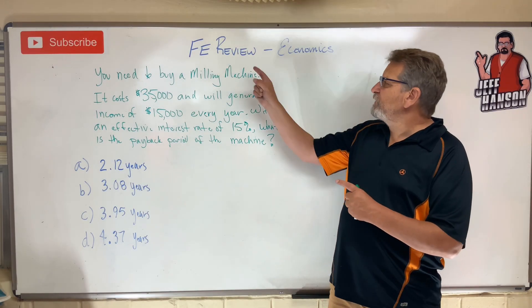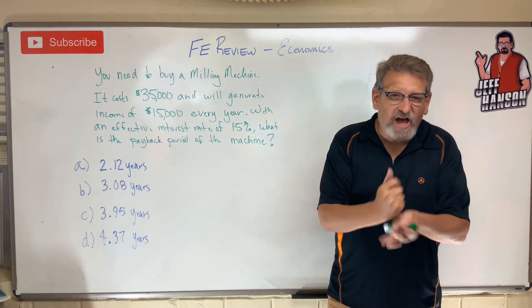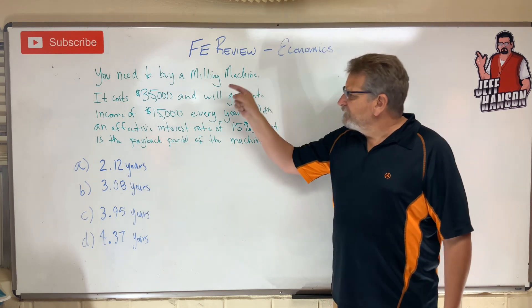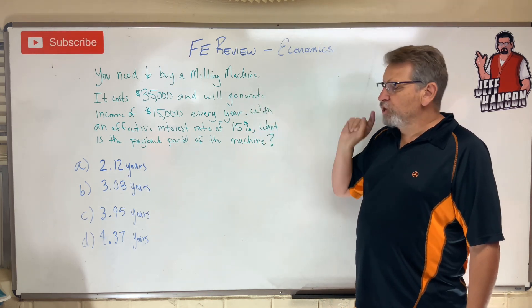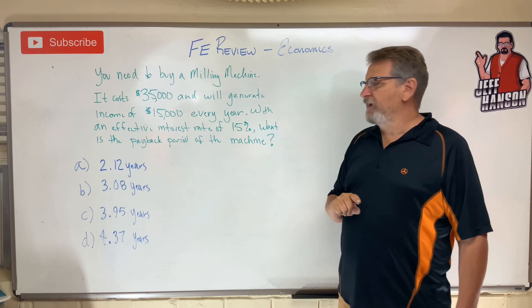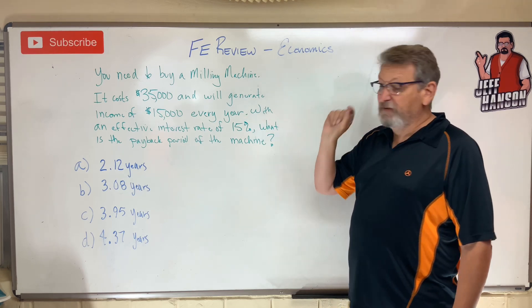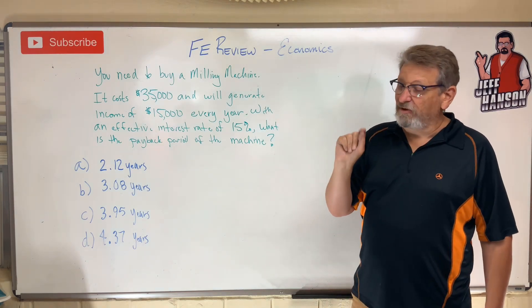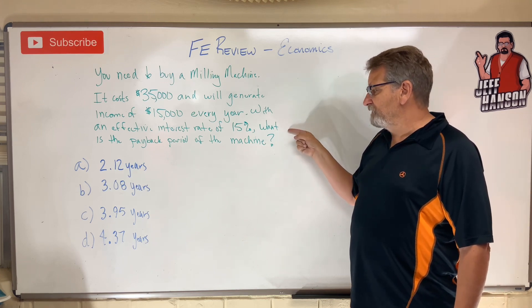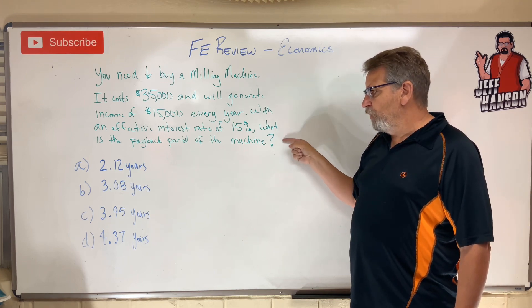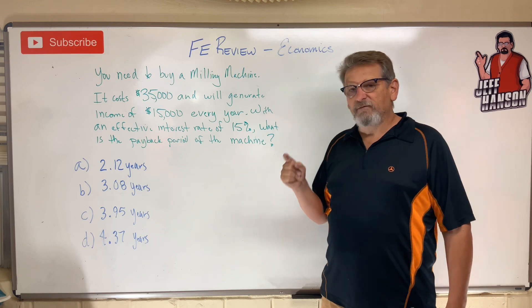Welcome back. FE Review Problems, economics again. If you need to buy a milling machine, it costs $35,000 and will generate an income of $15,000 every year with an effective interest rate of 15%. What is the payback period of the machine?